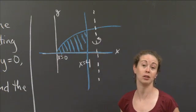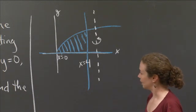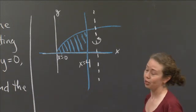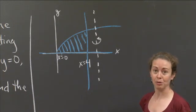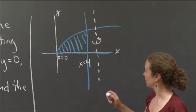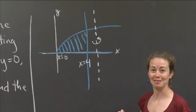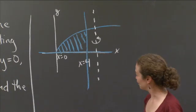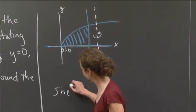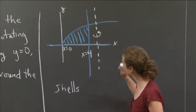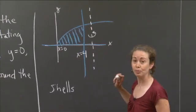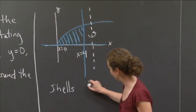So I'm going to use the shell method. I like the shell method for this problem. You could use the washer method, but I like the shells, and that's what I'm going to use. To do the shell method, remember, we are going to be interested in 2πrh. That's really what we need.